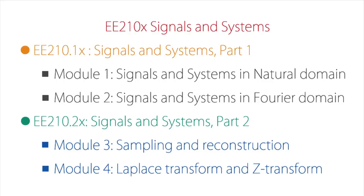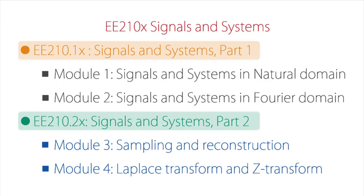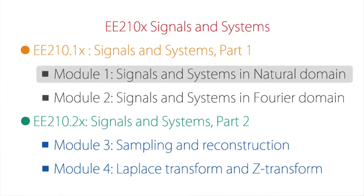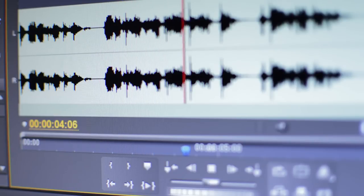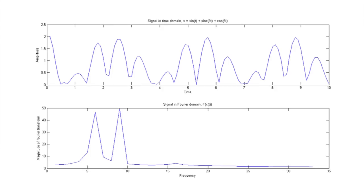We have envisaged this whole exposition in the form of two courses. The first course would aim at introducing the student first to signals and systems in the natural domain. Take the audio signal for example — the audio signal is naturally a function of time, so time is the natural domain. It makes sense to start from signals and systems in the natural domain because that is where we encounter them.